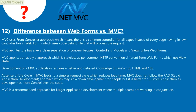Question 12: Difference between Web Forms versus MVC. MVC uses a front controller approach, meaning there is a common controller for all pages instead of every page having its own controller like in Web Forms, which uses a code-behind file to process requests. MVC has a clean separation of concern between controllers, models, and views. MVC is stateless as per common HTTP convention, unlike Web Forms which use view state. MVC development requires better knowledge of JavaScript, HTML, and CSS. Absence of a life cycle in MVC leads to a simpler request cycle which reduces load times. MVC does not follow the RAD (Rapid Application Development) approach, but gives developers more control. MVC is recommended for larger applications where multiple teams work in conjunction.